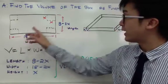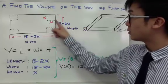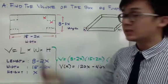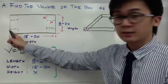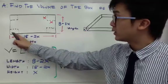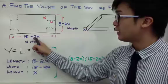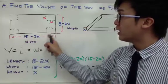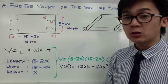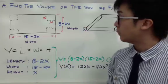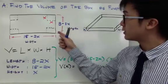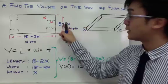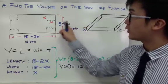We know it's a 15 by 8 inch box. Since we're cutting out the corner by x inches, for the width of your box — which starts at 15 inches — and you're cutting out two corners each measured by x, you will have 15 minus 2x. For the length, instead of 8 inches, you now have 8 minus 2x, which is the part of the cardboard that remains after the cuts.